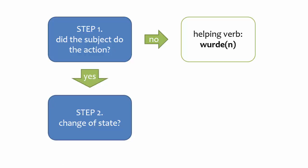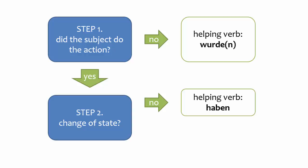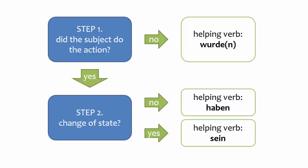If the subject did the action, the second step is to decide whether the action represents a change of state or position. If the answer is no, then choose haben as the helping verb. If the answer is yes, choose sein as the helping verb.